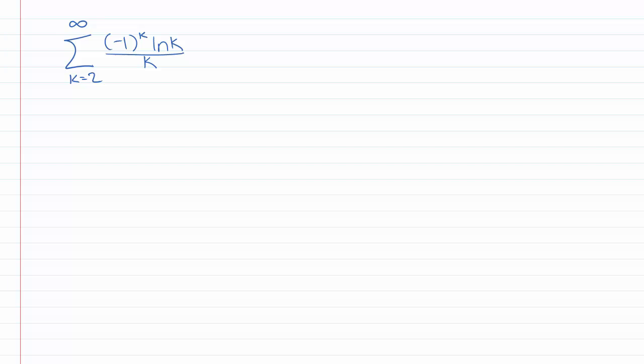Let's try one more example: the sum k goes from 2 to infinity of negative 1 to the k times natural log of k over k. This one is alternating since natural log of k and k are both positive. We have a sub k being natural log of k over k. Looking at this, I think absolutely it's not going to converge, because that's even bigger than 1 over k, which is harmonic. But let's start with the alternating series test to see if it converges conditionally.